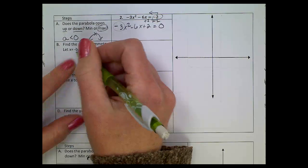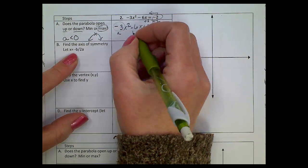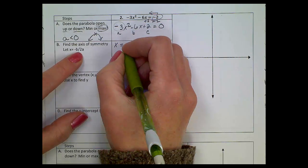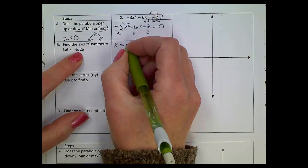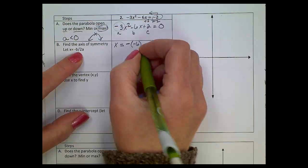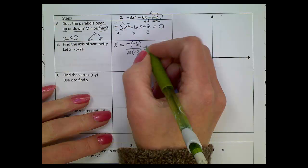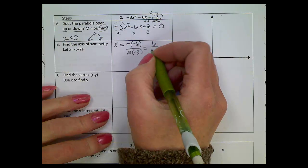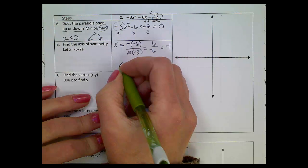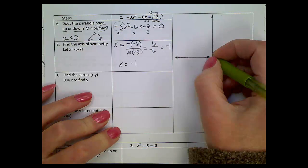Now, looking for the axis of symmetry, I have my a, b, and c. We have to let x = -b / 2a. I'm going to have a double negative here like the last problem, so minus a negative six over 2 times -3. I'll get a positive six on top, negative six on the bottom, and I'll get -1 for a simplified answer. So my axis of symmetry is x = -1.